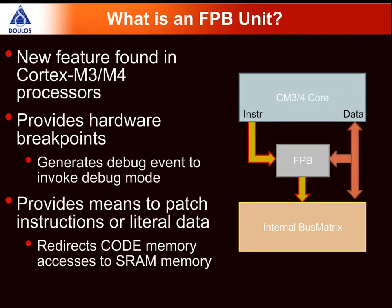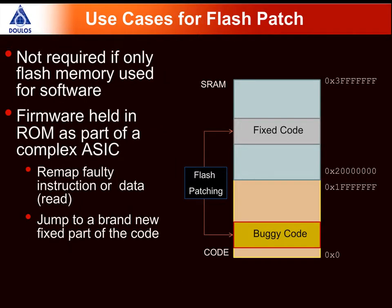So what is a FPB unit? This is a new feature found in the Cortex-M3 and M4 processors and it provides both logic for implementing hardware breakpoints as well as for code patching. In essence, this unit is able to intercept an instruction being accessed from the iCode memory region and reroute it towards another instruction placed in a system memory region, hence allowing you to provide a patch for instruction as well as data. The sophistication of the Flash Patch Breakpoint unit is not really required if you only intend to use it for creating breakpoints.